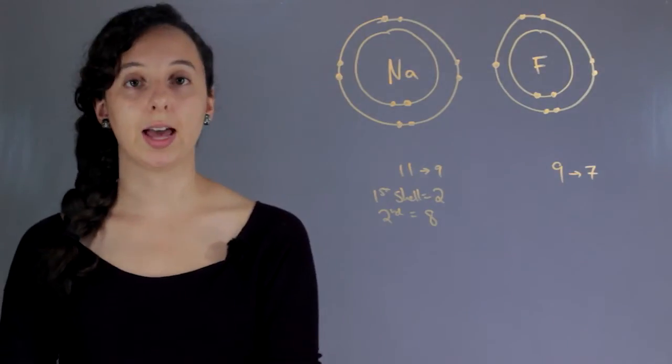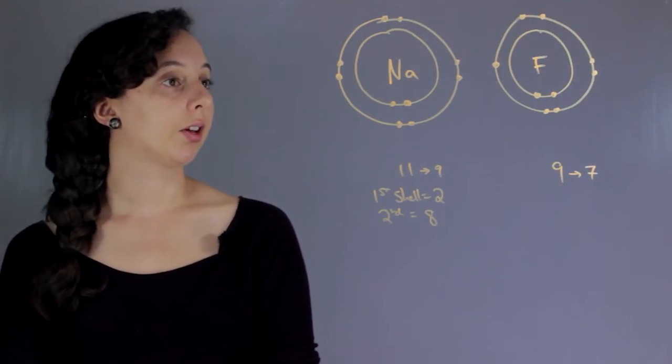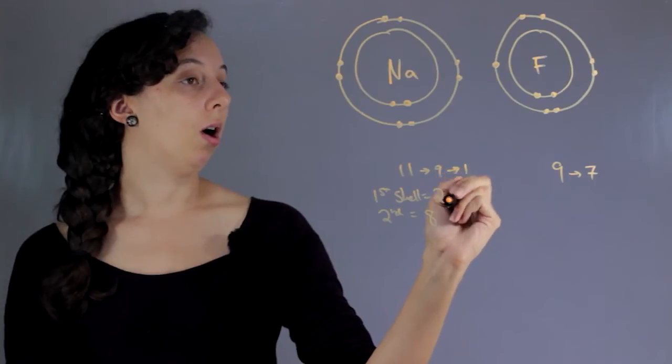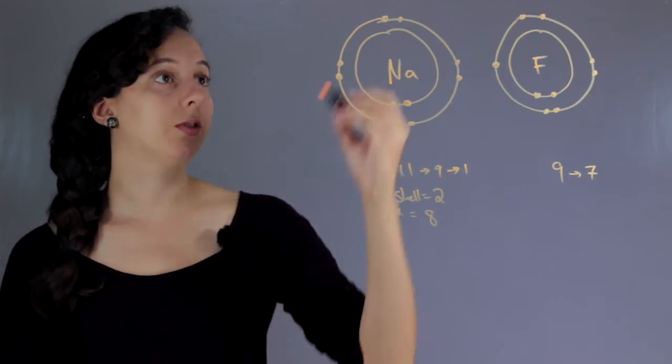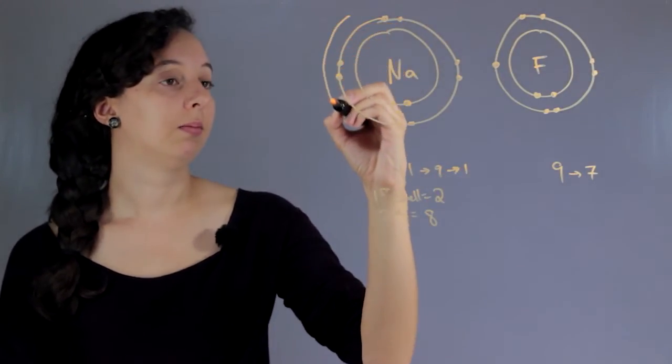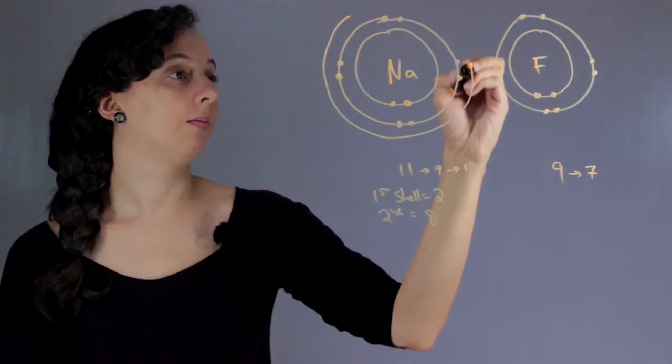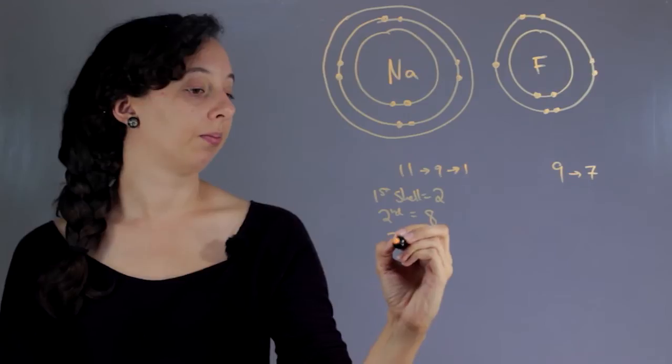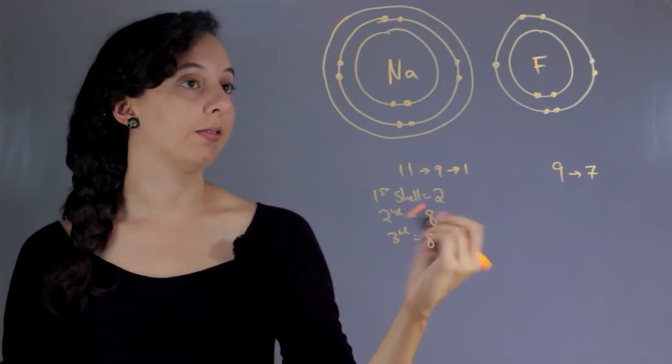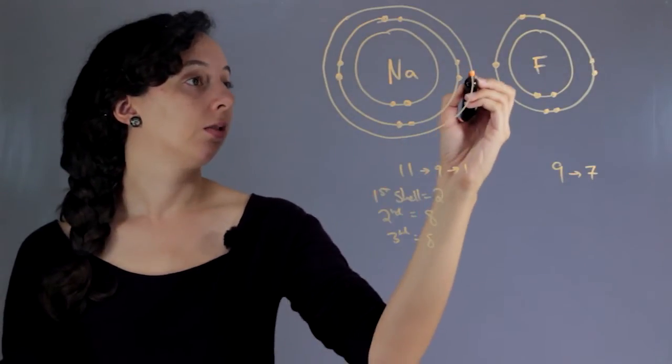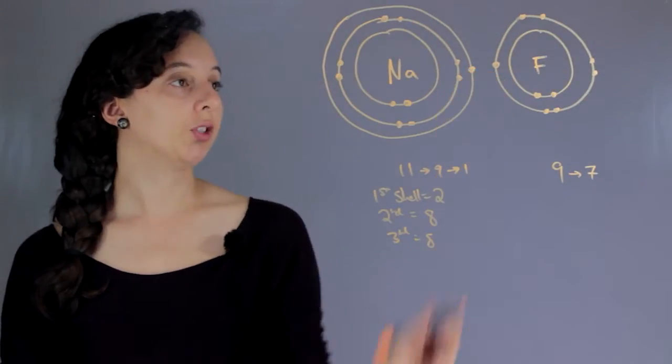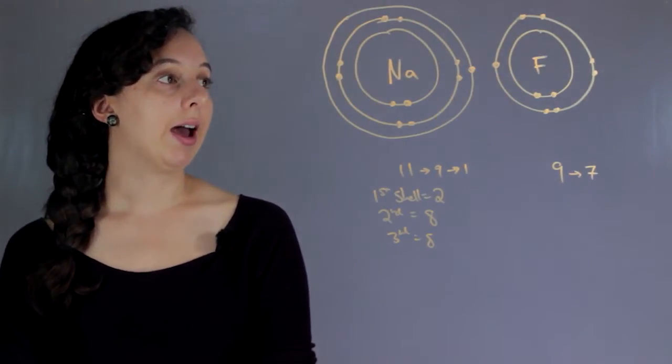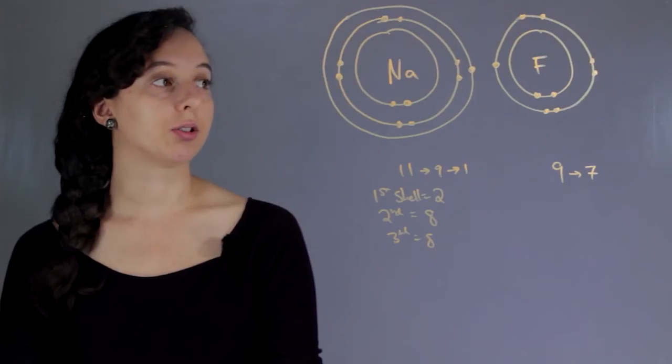So fluorine just has that. And so with sodium, we used 8. So now we're at 1. We still have 1 left over. So we have to write the third shell, which is also 8. But of course we only have this 1 right here. I'll draw it right there.